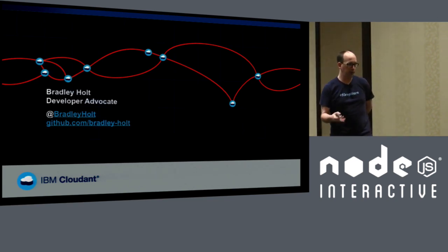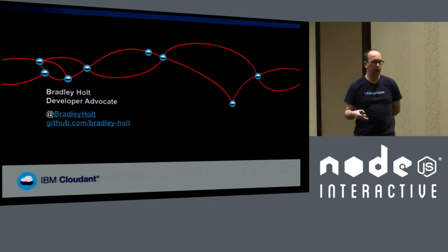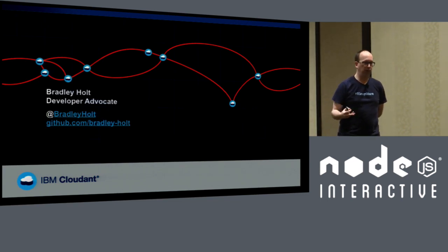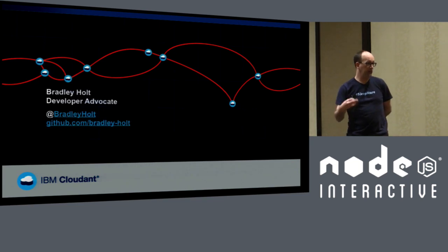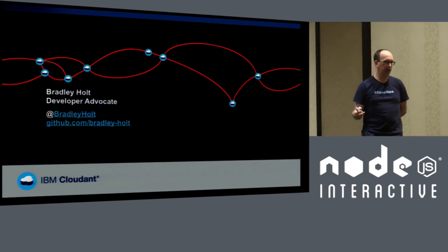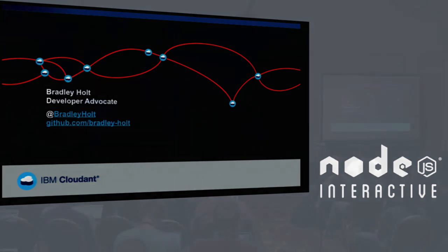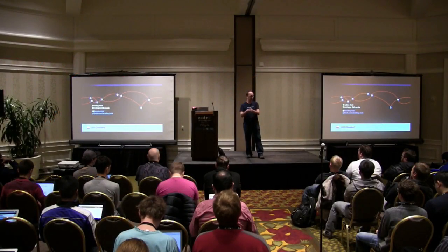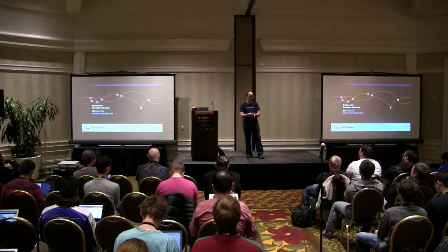In a hybrid app like Cordova or PhoneGap, it uses native backend storage like SQLite, which has a much higher limit than browser storage. So if you're not in a web environment — if you're in a hybrid mobile app environment — you're going to have a lot more storage to work with.